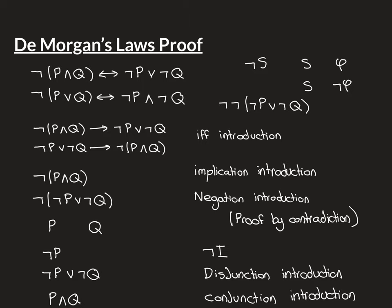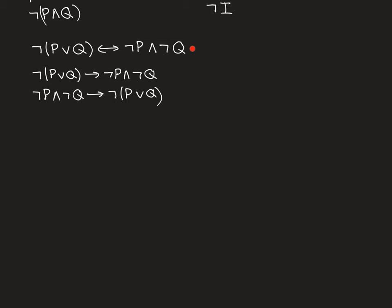Let's now move on to the second DeMorgan's law: 'not (P or Q) if and only if (not P and not Q)'. We want to show this biconditional statement. By biconditional introduction, in order to arrive at this, we need to have these two unidirectional implications. So we'll start by trying to show the first direction and then move on to the second direction.